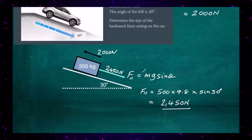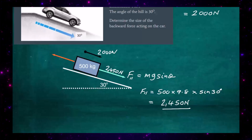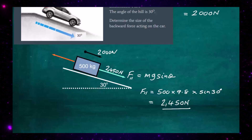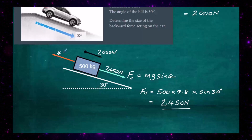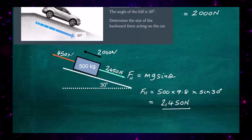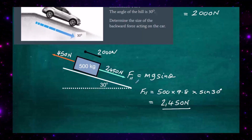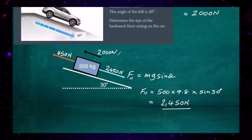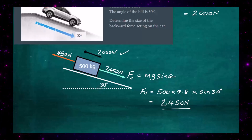The unbalanced force is 2000 newtons, but the weight component down the slope is 2450 newtons, so the backward force acting on the car must be 450 newtons. The full picture is: 2450 newtons acting down the slope, take away 450 newtons acting up the slope, gives us 2000 newtons of unbalanced force, confirming the acceleration from F equals MA.